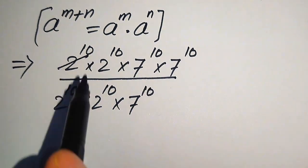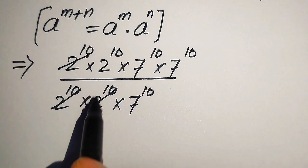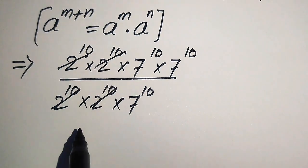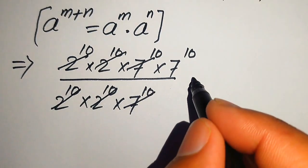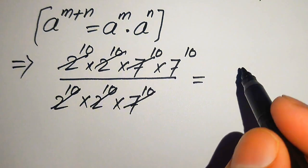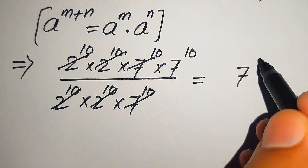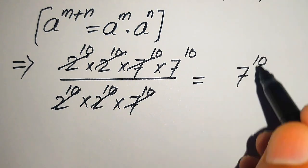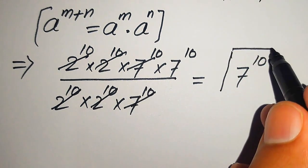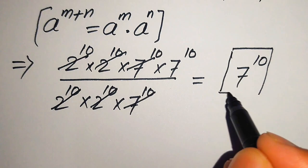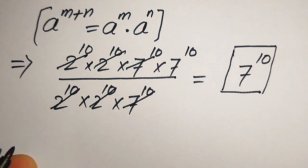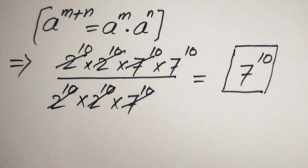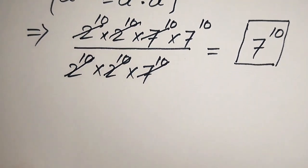Now we cancel matching terms: 2^10 cancels with 2^10, another 2^10 cancels, and 7^10 cancels, leaving only 7^10 remaining. This is the final simplified form from the first method, and our final answer is 7 to the power of 10.